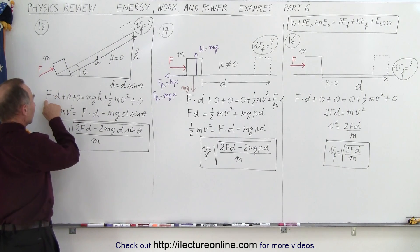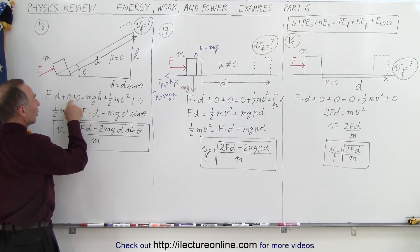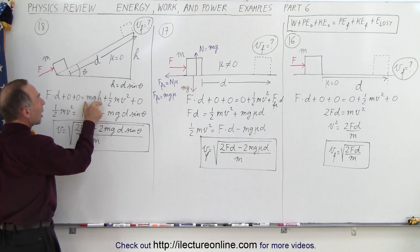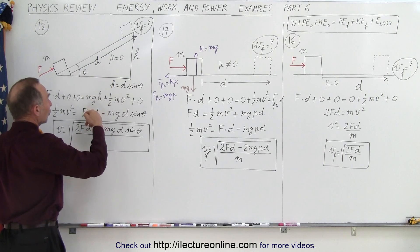So notice now that we still have work put into the system, force times distance, no initial potential energy, no initial kinetic energy, but we now have final potential energy, mgh, which of course can be written as mg times d sine theta, and we have some final kinetic energy.